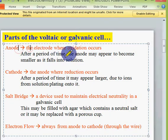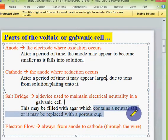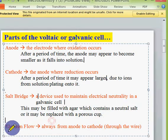Anode will decrease in size after some time. Cathode will become larger after some time. Another one is the salt bridge, which is used to maintain electrical neutrality. It is generally filled with agar agar solution with neutral salt. Electrons are flowing from cathode to the anode.